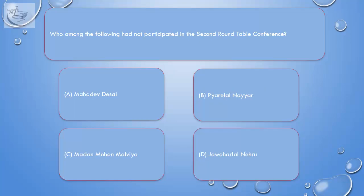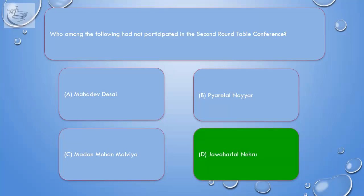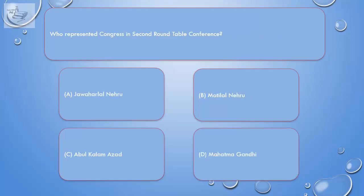Question: Who among the following had not participated in the second Round Table Conference? A. Mahadev Desai, B. Piyare Lal Nayar, C. Madan Mohan Malviya, D. Jawaharlal Nehru. Correct answer is D. Jawaharlal Nehru.